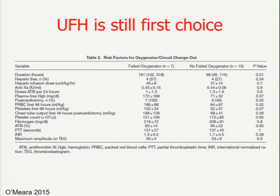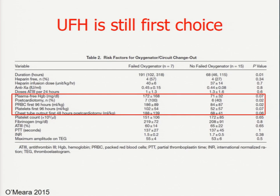Although we still use unfractionated heparin, we know that if we look at patients who actually have thrombus in their circuit versus those who had none, there are some factors which play a role. One of them is free plasma hemoglobin, which I will discuss in a few minutes. Another is whether the patient has already had surgery — this is a very challenging group, much more challenging than venovenous. And there are some other factors which apparently also play a role.